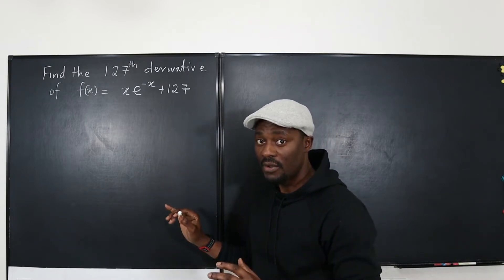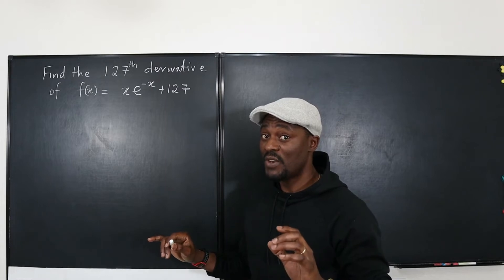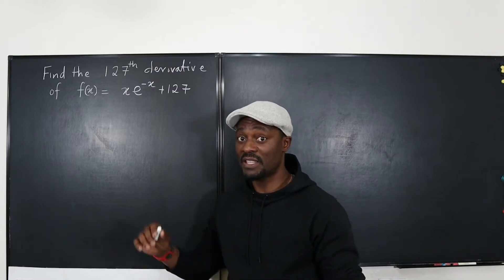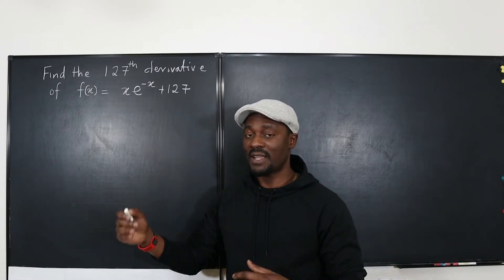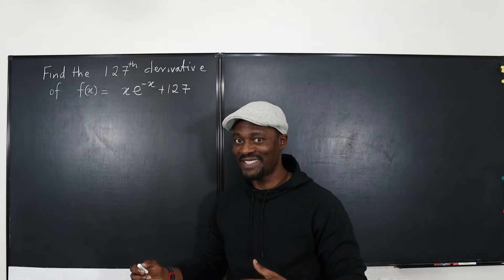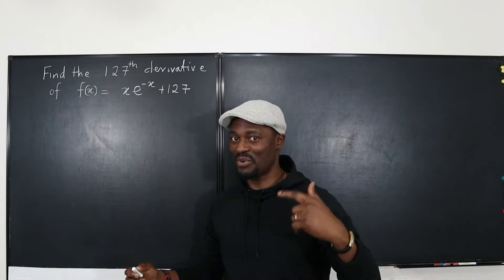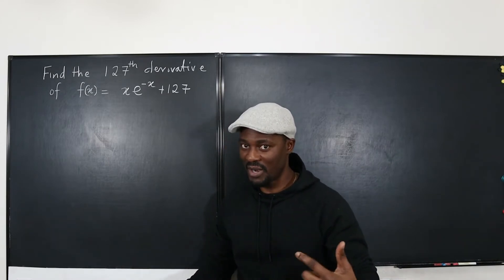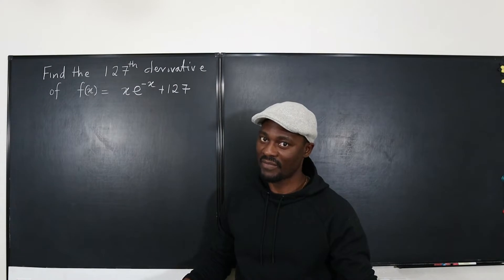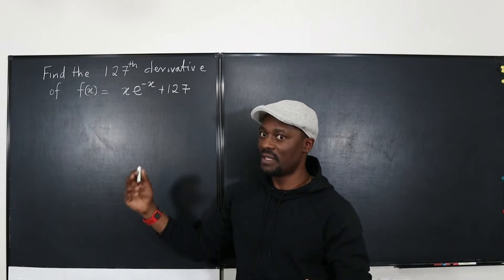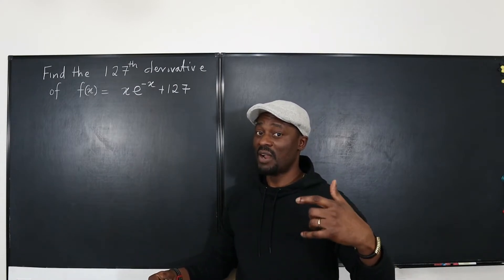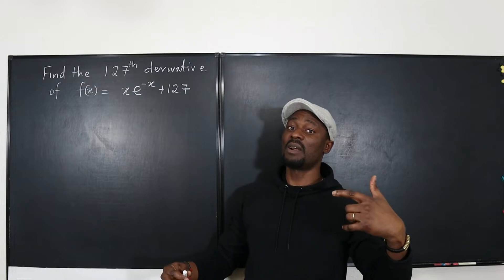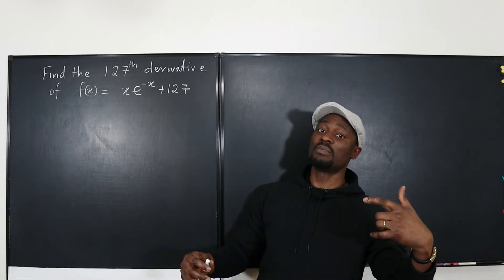Remember that when you take the first derivative you say it is f prime. The second derivative is f prime prime. The third derivative is f prime prime prime. So what we're looking for is the 127th prime — an enormous number of primes written out.